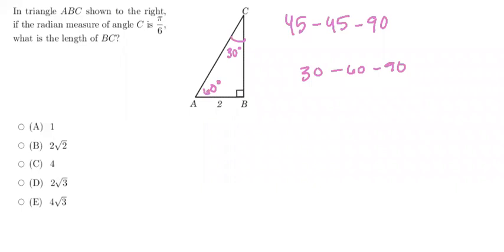So now if you have these ratios memorized in a 30-60-90 triangle, the side opposite of 30 degrees is going to be x, the side opposite 60 degrees is going to be x root 3, and the hypotenuse, or the side opposite the 90 degree angle, is going to be 2x.